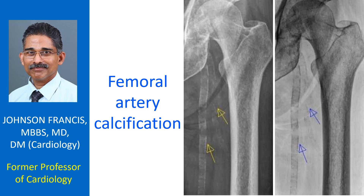This is the site where it is commonly punctured by the Seldinger technique for angiography, insertion of an intraaortic balloon pump, and sometimes even for arterial blood gas sampling. Femoral puncture for ABG is used only if the radial axis is not feasible, to avoid unnecessary trauma to the femoral artery by frequent use for ABG.